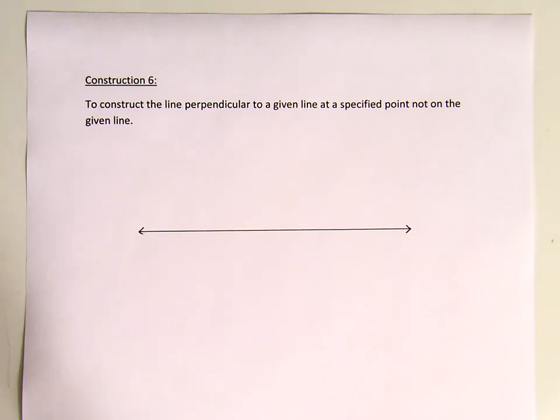The following is Construction 6, which is to construct a line perpendicular to a given line at a specified point not on the given line.